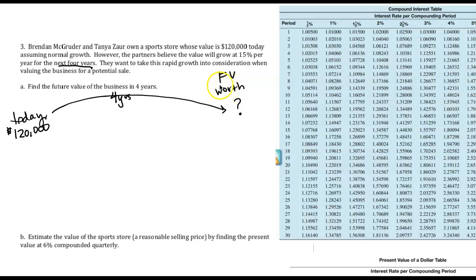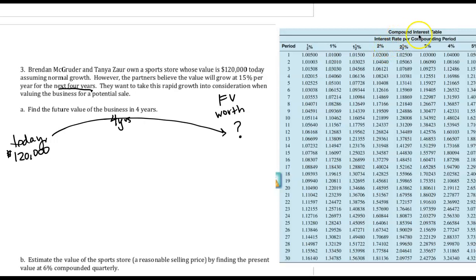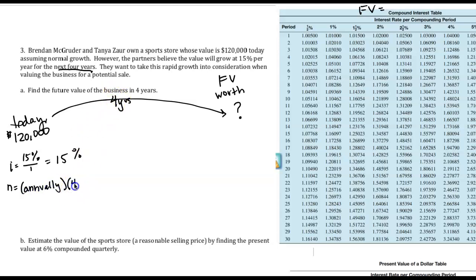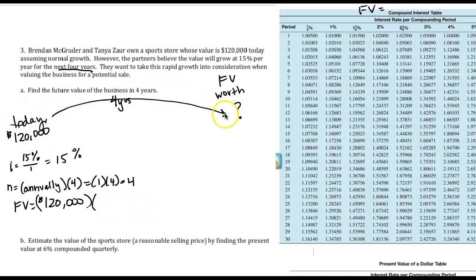We want the future value — what we worked on in Section 10.1 — so we go back to the compound interest table. Our I value takes 15% per year, annual, so 15% divided by 1 stays at 15%. Our N says interest is calculated annually for 4 years, so 1 times 4 is 4. The table number will be bigger than 1 so that it makes the value larger.